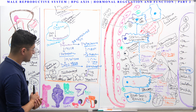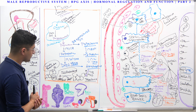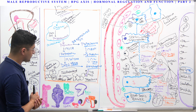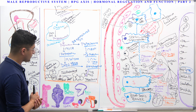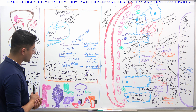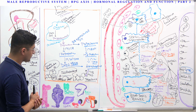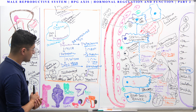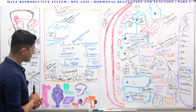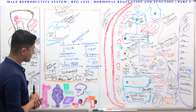Now, what does dihydrotestosterone do? Testosterone also works in the skin — causing pubic hair growth, axillary hair growth, and all of that. That's what it does in the skin. But remember how testosterone gets to all these different peripheral tissues: testosterone is secreted into the blood, where it can bind albumin — about 50% of testosterone binds to albumin.